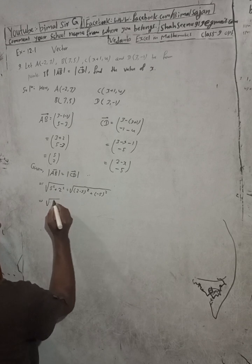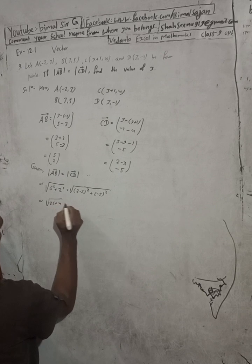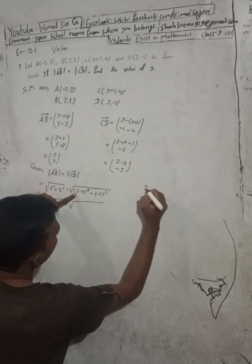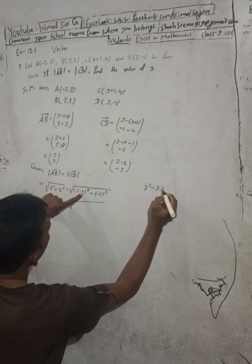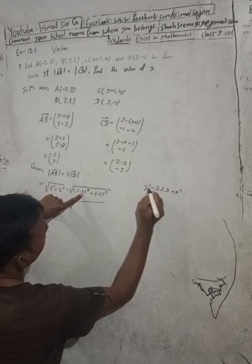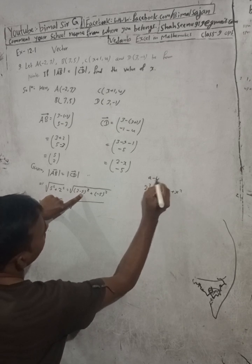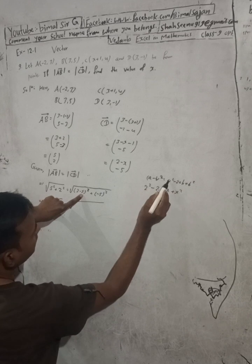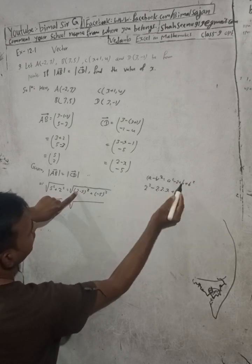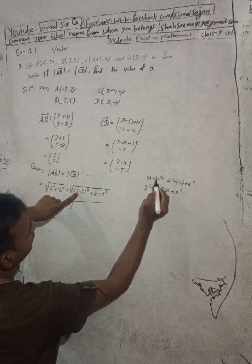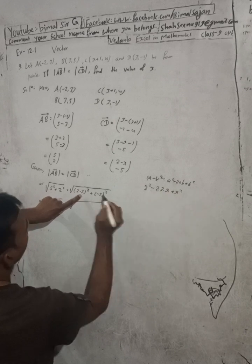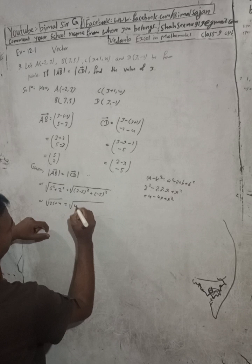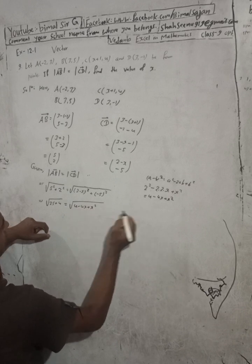Solving: 25 + 4 = (2 - x)² + 25. Now expand (2 - x)² using the formula (a - b)² = a² - 2ab + b²: so (2 - x)² = 4 - 4x + x². Therefore: 29 = 4 - 4x + x² + 25.